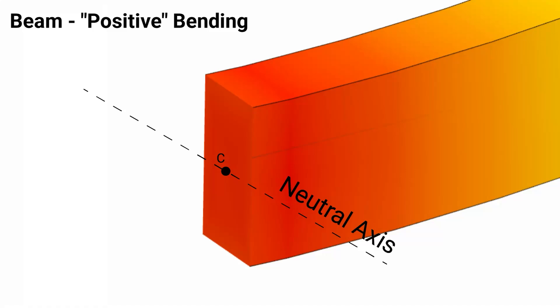Therefore, the neutral axis will act at the centroid of the cross section. If we have a T-beam or I-beam, as that centroid changes, the neutral axis will also change. With the neutral axis denoted, we can now visualize the stresses.